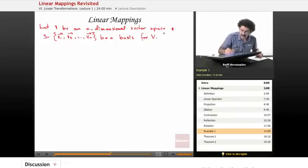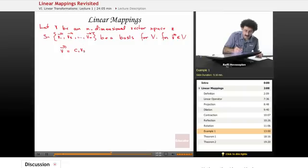We know that for a vector V in the vector space V, because this is a basis, we can write it as C1 times V1, just a linear combination of the elements of the basis. That's the whole idea of a basis.